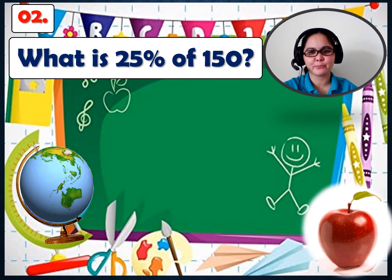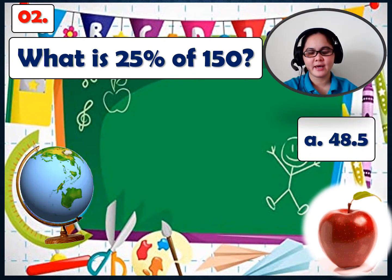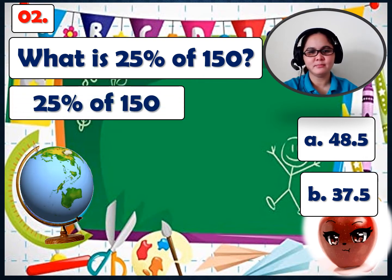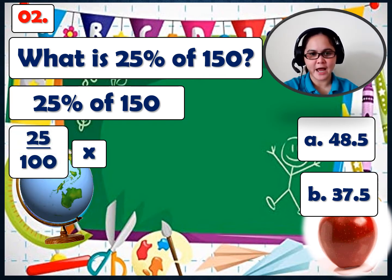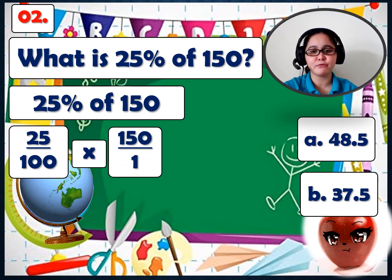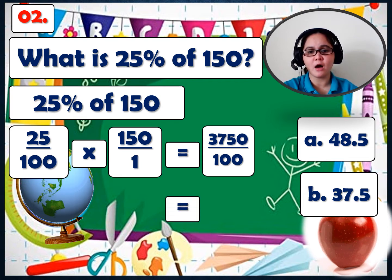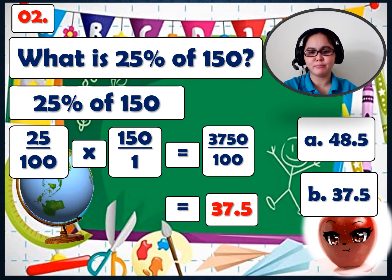Number 2: What is 25% of $150? A: 48.5, or B: 37.5. Let's solve. 25% of $150. Change 'of' into times. Using fraction form: 25 over 100 times $150 over 1. 25 times $150 equals $3,750; 100 times 1 equals $100. So $3,750 over $100 equals $37.5. The correct answer is B.